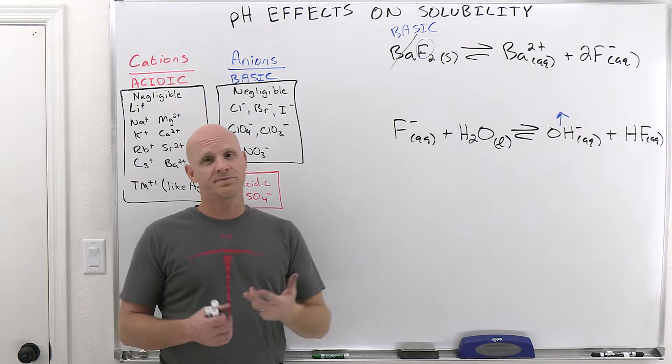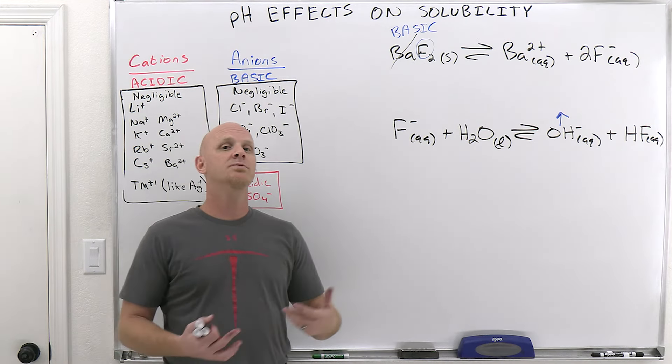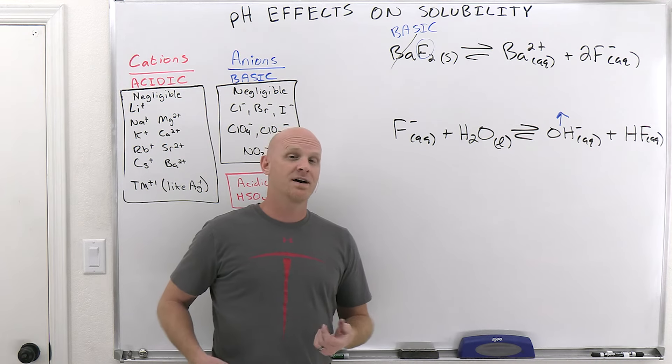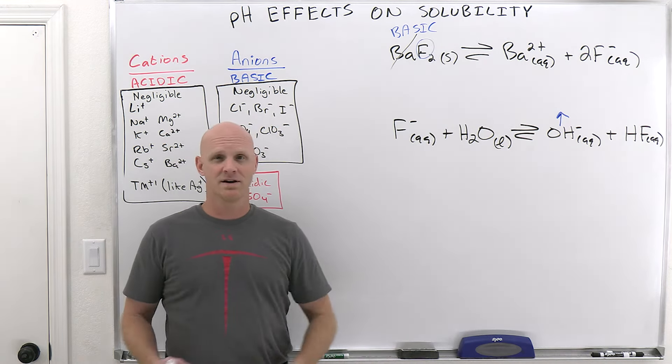And it works the exact opposite. If we had an acidic salt, the acidic salts are more soluble in basic solutions, less soluble in acidic solutions. And then finally, neutral salts, their solubility is largely pH independent. It doesn't matter.